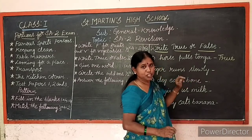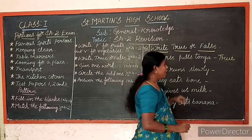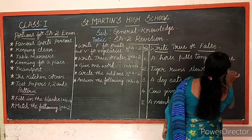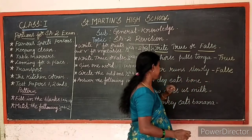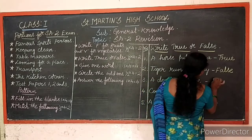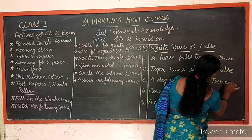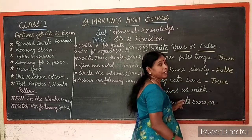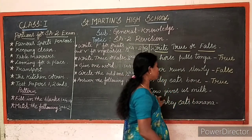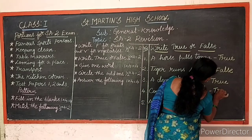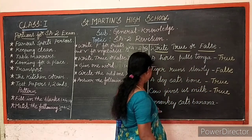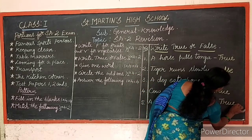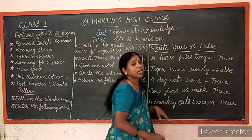Tiger runs slowly — is it true? No, tiger runs very fast. So write F-A-L-S-E. A dog eats bone — true, write T-R-U-E. Cow gives us milk — yes, every day we get milk from the cow, so write T-R-U-E. A monkey eats banana — yes, write T-R-U-E. All the statements are correct except number two — tiger runs slowly is false.